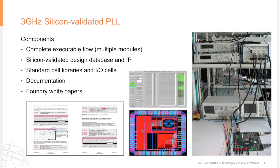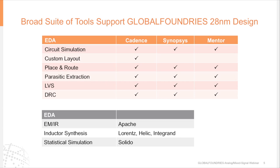This flow is supported directly by Global Foundries and available for download. Before discussing each flow module, I'd highlight the breadth of EDA support for 28-nanometer design. We partner with various EDA vendors to certify their tools with our process, and the list continues to grow. We have broad support from all major vendors, as well as specialty tools such as Inductor Synthesis, Statistical Simulation, and ElectroMigration IR Drop.